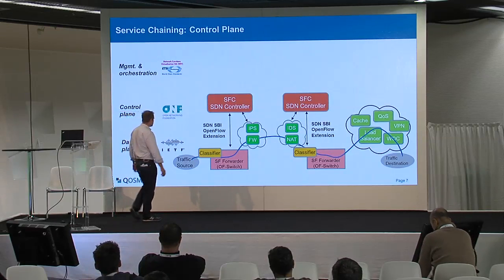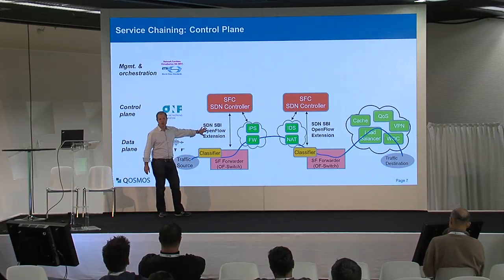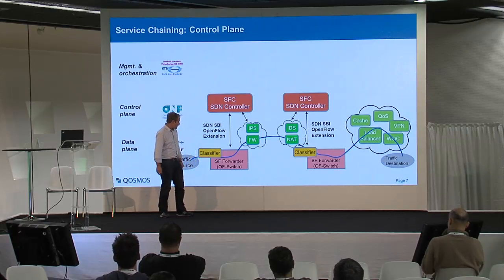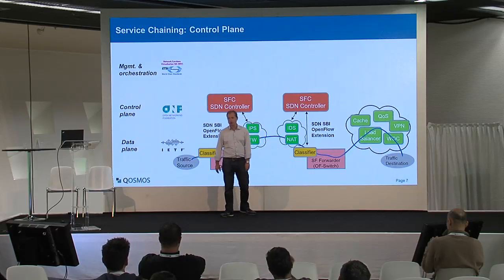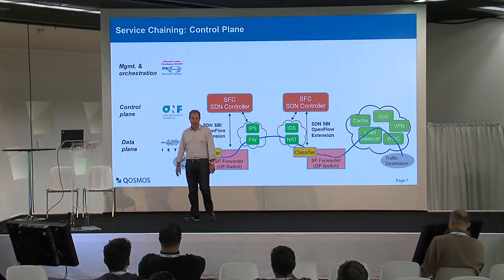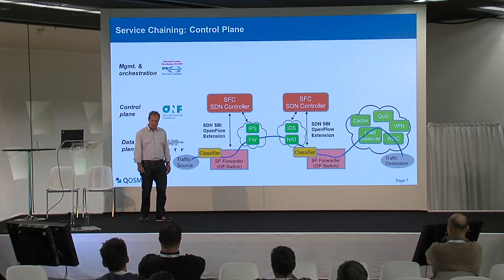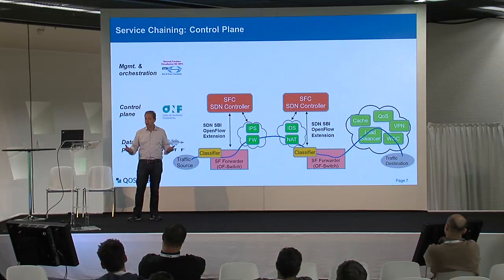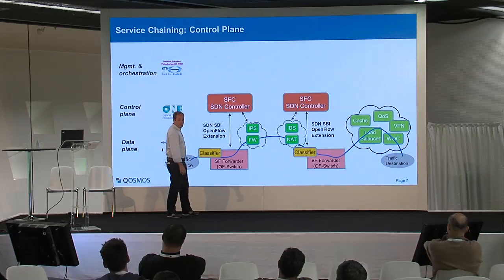This graph has been designed by people working at the layer 4 to 7 working group at the ONF — the Open Networking Foundation. The idea is that now we have this smart infrastructure able to do switching based on chain IDs instead of IP addresses or MAC addresses. You need to populate all the network infrastructure with this information, and this is where the ONF is working.